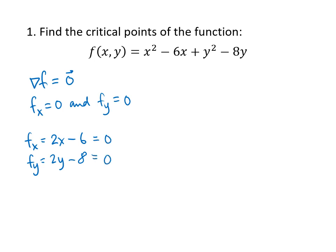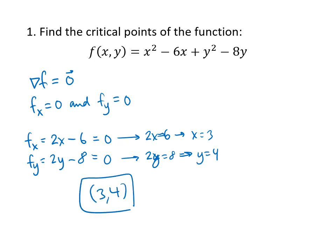Sometimes the equations are relatively easy to solve like they are in this example. I solve this first equation for x: I get 2x equals 6, and that means x equals 3. Solving the second equation gives me 2y equals 8, and that's going to give me y equals 4. So my critical point — I only have one — is the point (3, 4), and that's it.